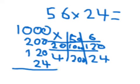I add them all up. 0 plus 0 plus 0 plus 4 is 4. Then 2 plus 2 is 4. 0 plus 2 plus 1 is 3. And then 1 plus 0 is 1. So your answer is 1,344.